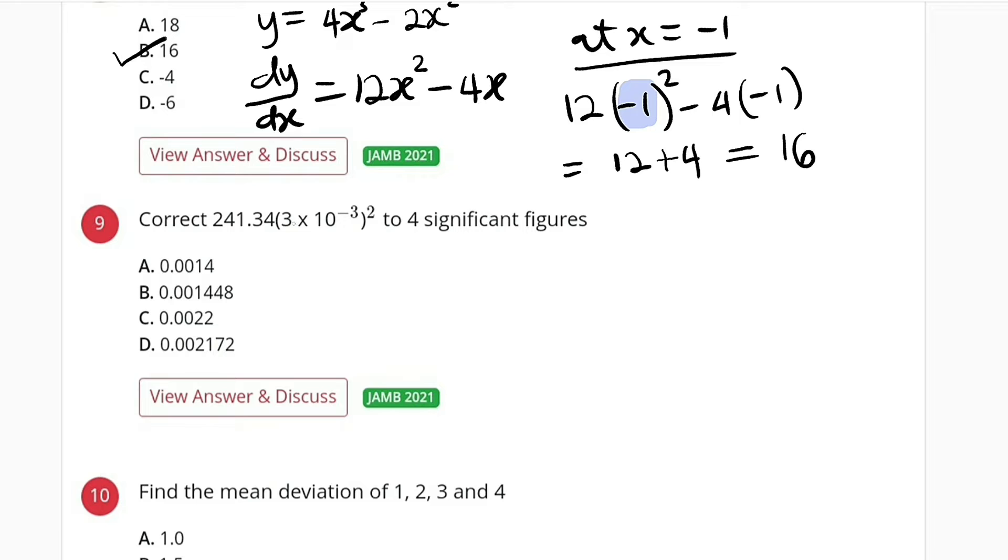simplify the bracket. 3 multiplied by 10 to the power of negative 3 is the same thing as 3 divided by 1000. Then you square that, then whatever you have you multiply by 241.34. So let me use my calculator to do that directly. We have 3 divided by 1000